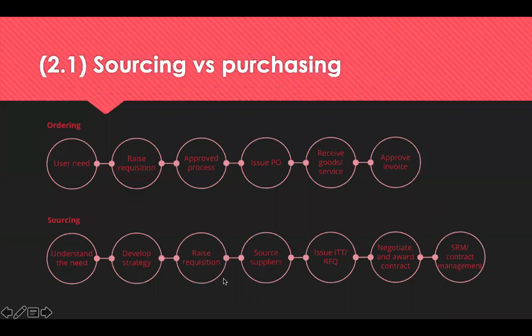This diagram helps you to understand the difference between sourcing and procuring and the stages involved in each. Ordering is where a need is identified, you raise an order, it gets approved and issued, the goods and services are received and the invoice is paid.